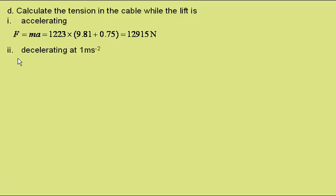Part 2: Calculate the tension in the cable while the lift is decelerating at 1 metre per second squared. Now again using F equals MA, the mass of 1223 kilograms, but now the deceleration needs taking away from the acceleration due to gravity, giving a force of 10775 newtons.